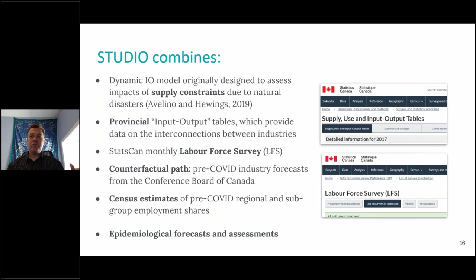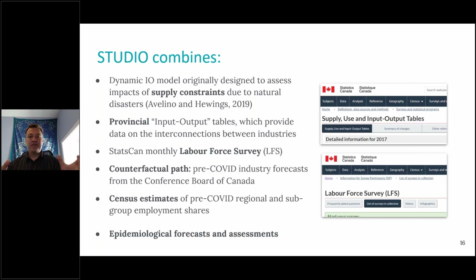To think about more regional and more micro implications, we have census estimates that we're using, based on employment shares in different regions and different sectors of the economy. A big input is the epidemiological forecasts and assessments I mentioned before. The way to think about this STUDIO framework is as the combination of all of these things.